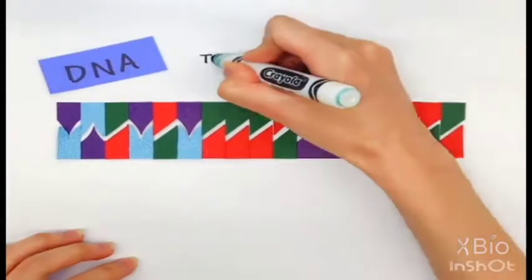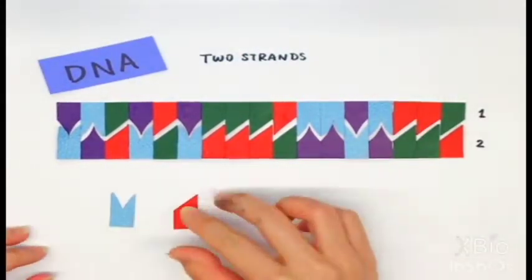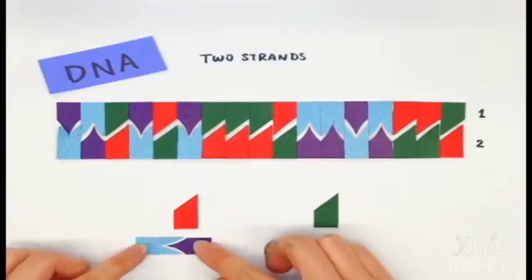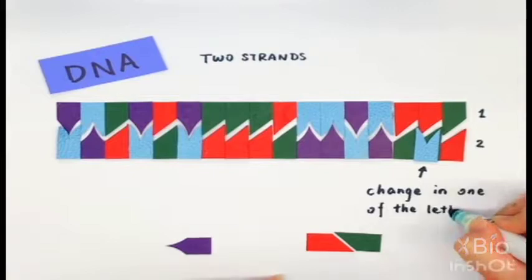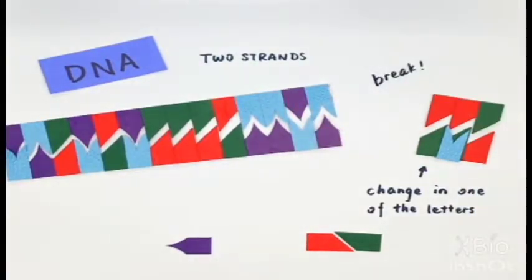DNA is made up of two matching strands. Each strand has a series of four letters and they're matched in pairs. A mutation could mean a change in one of the letters or even cutting both strands in two.